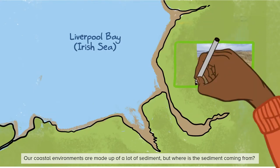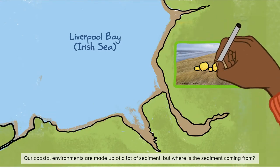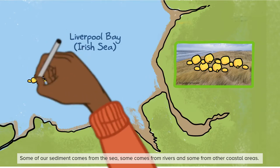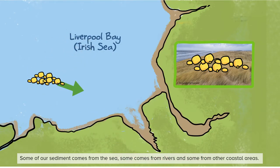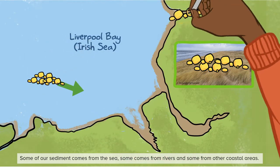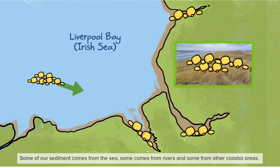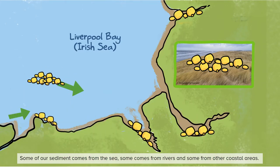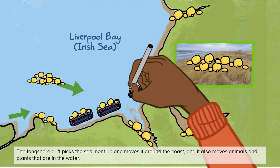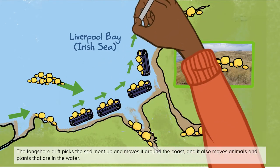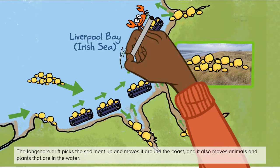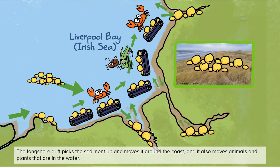Our coastal environments are made up of a lot of sediment, but where is the sediment coming from? Some of our sediment comes from the sea, some comes from the rivers and some comes from other coastal areas. The longshore drift picks the sediment up and moves it around the coast, and it also moves animals and plants that are in the water.